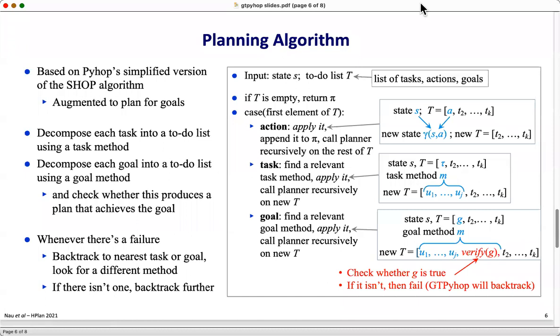The planning algorithm is based on the one in PyHop, but augmented to plan for goals. It decomposes each task into a to-do list using a task method, and it decomposes each goal using a goal method. In the case of goals, it also adds a check whether the decomposition produces a plan that achieves the goal that we're trying to achieve, and if the goal hasn't been achieved, then it fails so that GTPyHop will backtrack.